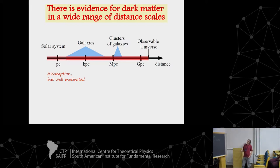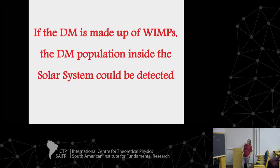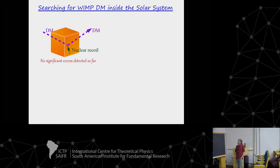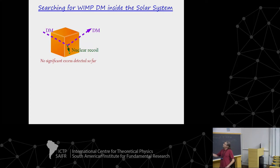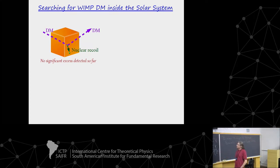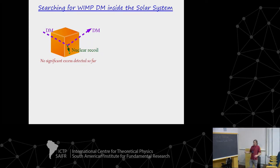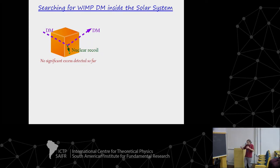If dark matter is made up of weakly-interacting massive particles, then the population inside the solar system could be tested and probed. There have been three methods proposed to detect dark matter inside the solar system. The first one is called direct detection, which is based on the possibility that dark matter particles could interact with a nucleus in a detector. This nucleus would recoil, and by detecting this nuclear recoil, you could infer the existence of dark matter particles inside your laboratory.